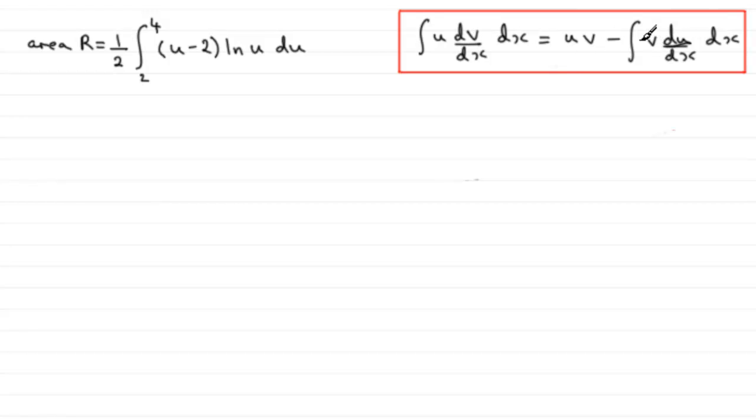You'll find this formula in your formula books. It's the integral of u times dv dx with respect to x is equal to uv minus the integral of v du dx dx.